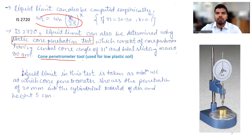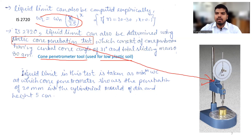The cone penetrometer tool is used for low plasticity soils. In this test, the liquid limit is taken as the minimum water content at which the cone penetrometer shows a penetration of 20 mm into a cylindrical mould of 5 mm diameter and height.